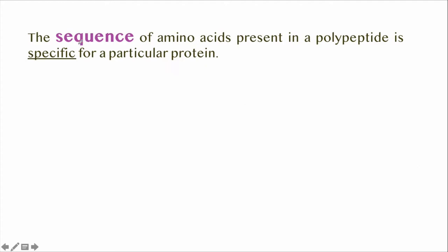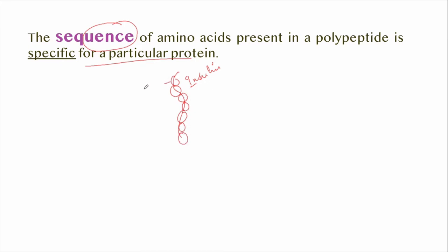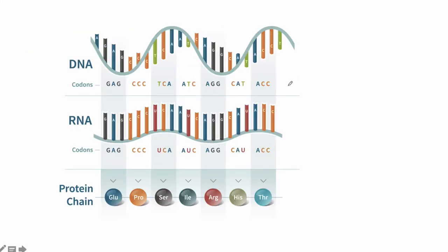The sequence of amino acids present in a polypeptide is specific for a particular protein. The specificity of a particular protein is due to the sequence of amino acids present in the polypeptide. The distinctive sequence of amino acid units is governed by the codon sequence of the gene that controls its formation.